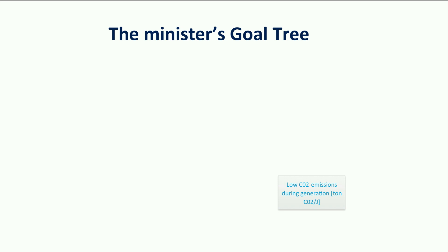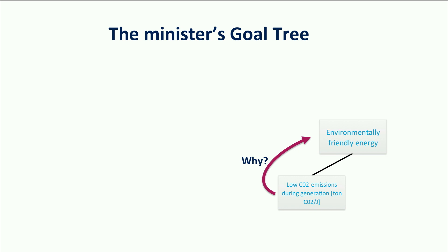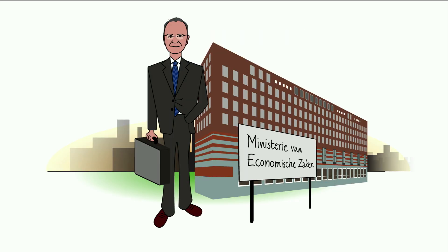The minister wants to reduce these emissions to supply the Dutch citizens with environmental friendly electricity. You can keep on asking why until the questions or answers become very obvious. But Minister, why is creating environmental friendly energy so important? Well, in that way, the Dutch citizens can make use of a sustainable energy supply.